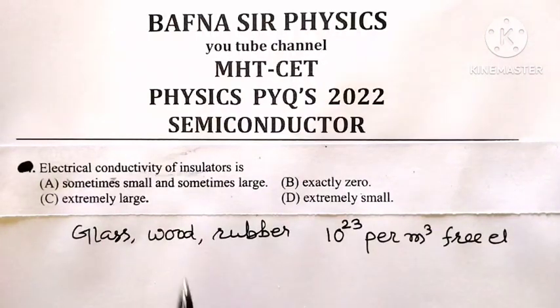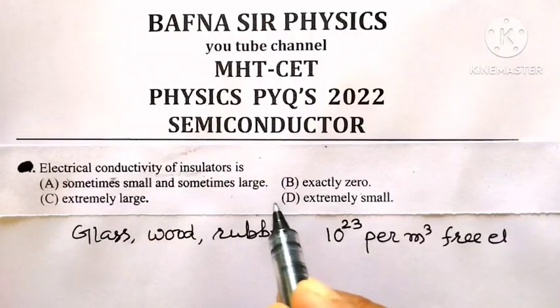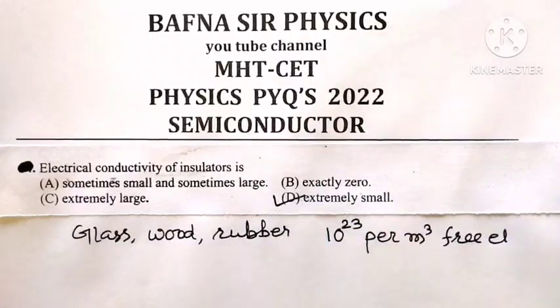the electrical conductivity of insulators is extremely small. So option D is the correct option.